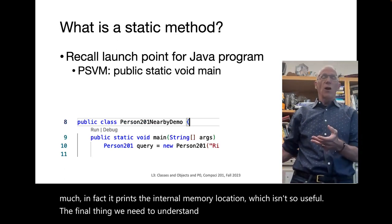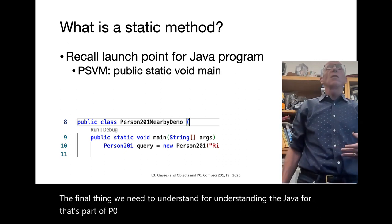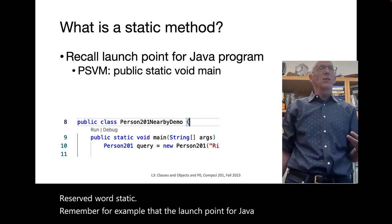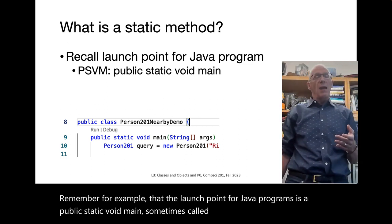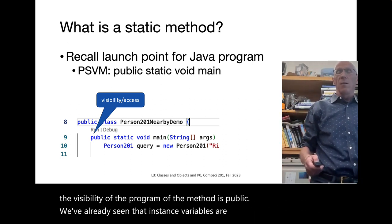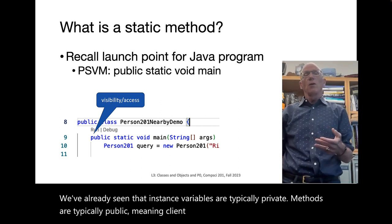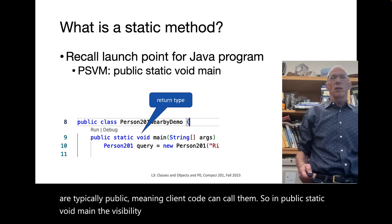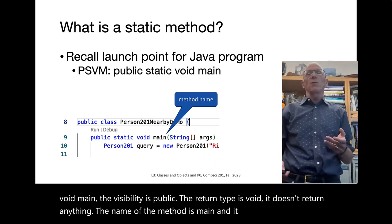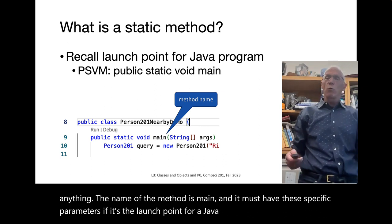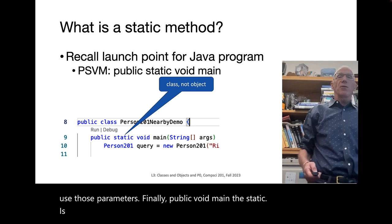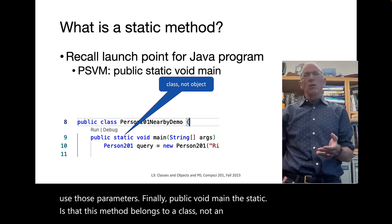The final thing we need to understand for P0 is the reserved word 'static'. The launch point for Java programs is public static void main, sometimes called PSVM. The visibility of the method is public. Instance variables are typically private; methods are typically public, meaning client code can call them. The return type is void — it doesn't return anything. The name is main, and it must have specific parameters if it's the launch point for a Java program.